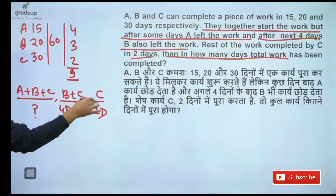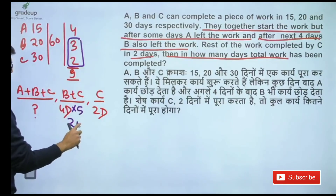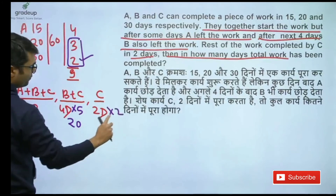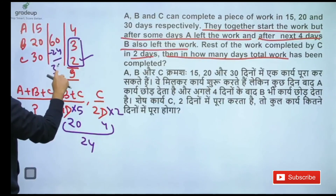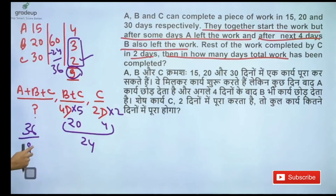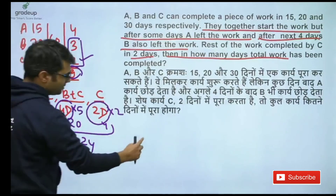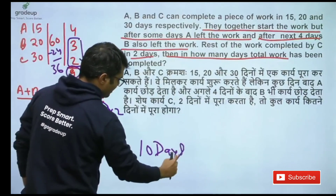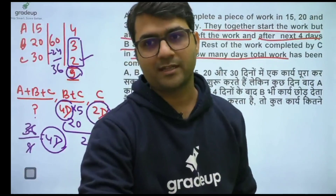B and C can do 5 unit work per day, so in 4 days that's 20 done. C can do 2 units per day, so in 2 days that's 4 done. Total done = 24, rest = 36. This is to be done by ABC — ABC can do 9 unit work in a day, so they complete it in 4 days. Total: 4 + 4 + 2 = 10 days is the right answer. Now I strongly believe you all understand the concept.